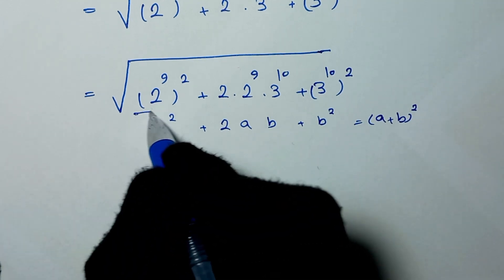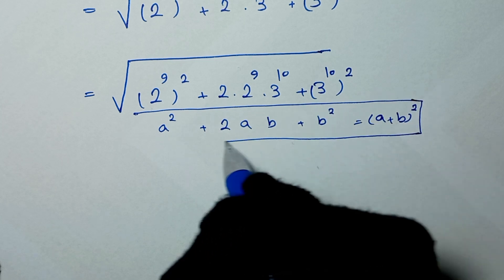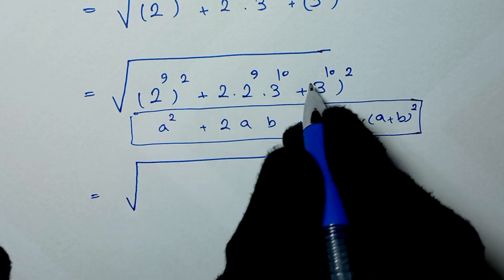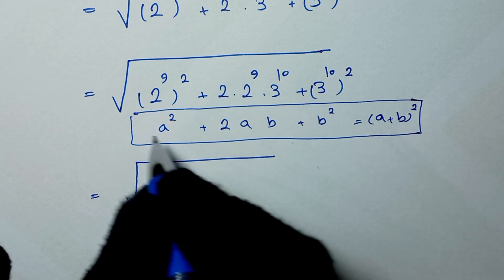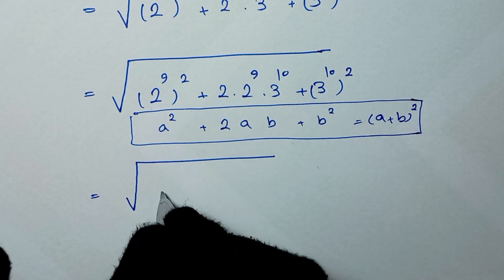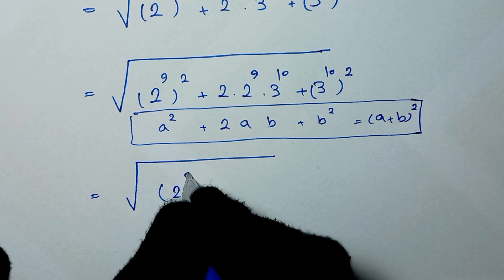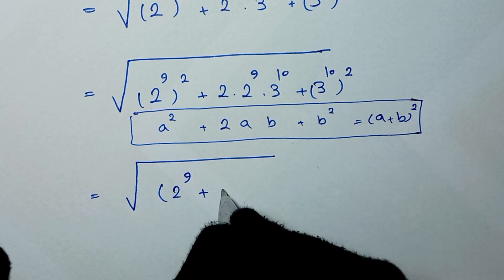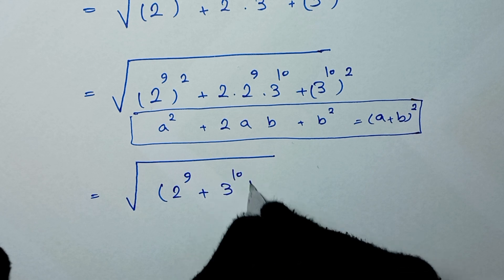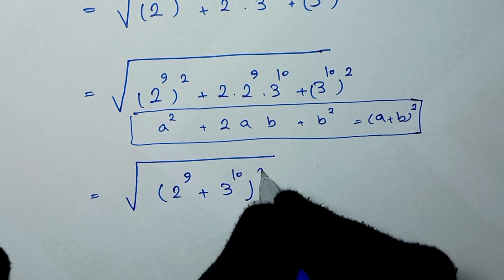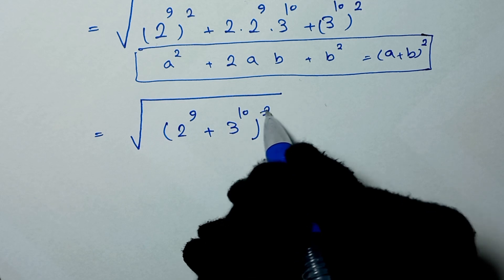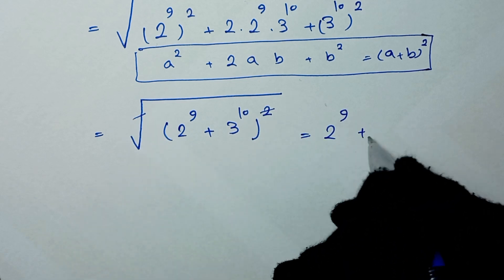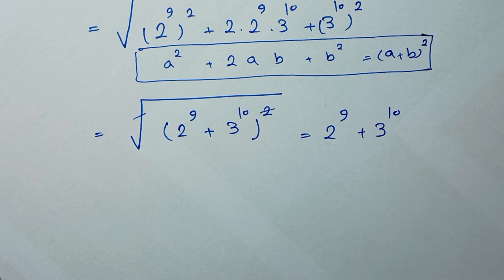So we write this expression in that form, where a is 2 to the power of 9 and b is 3 to the power of 10. We get the square root of (2 to the power of 9 plus 3 to the power of 10) squared. The square root and the power of 2 cancel, giving us 2 to the power of 9 plus 3 to the power of 10.